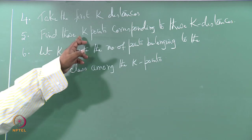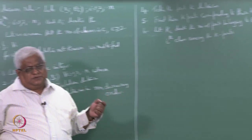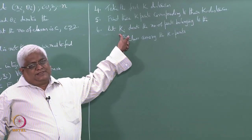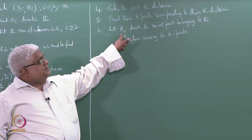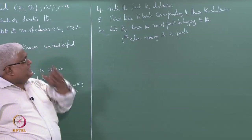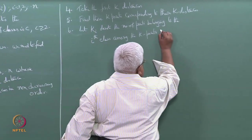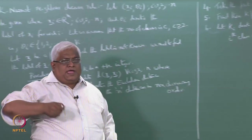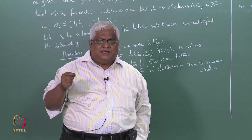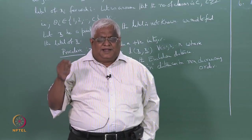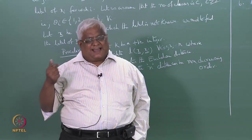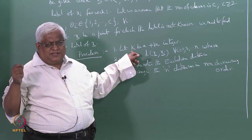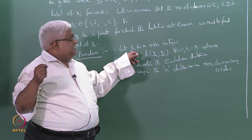We have k points. From these k points, find those belonging to class 1 — call that count k1. The number belonging to class 2, call it k2. Similarly, the number belonging to class c, call it kc. Some classes may not have any point — ki can be 0.